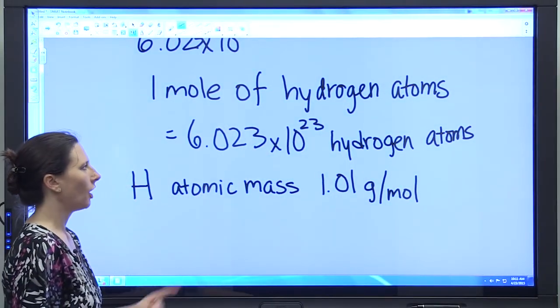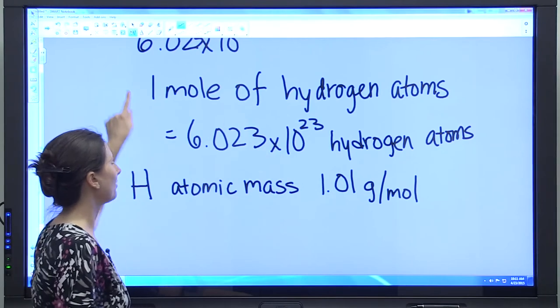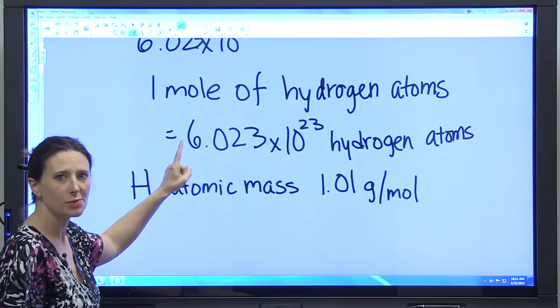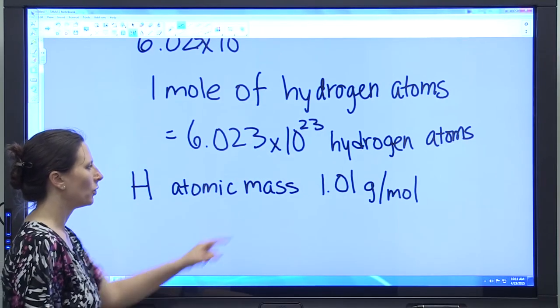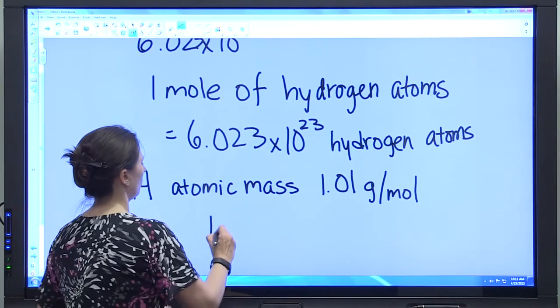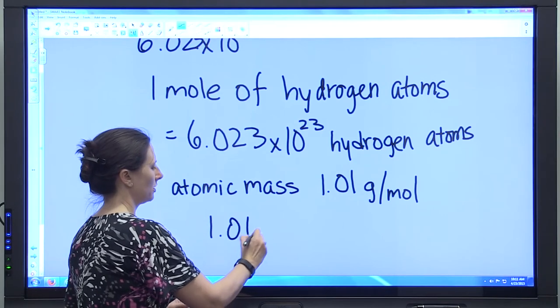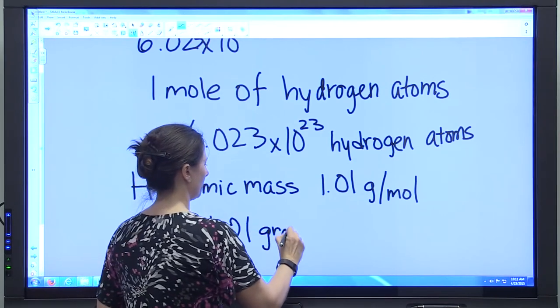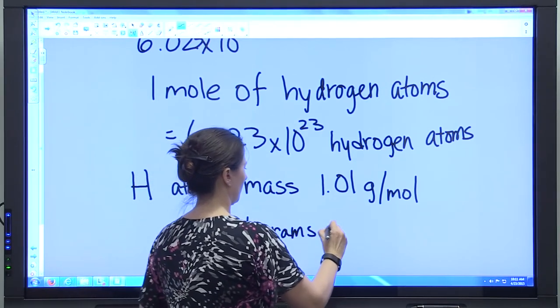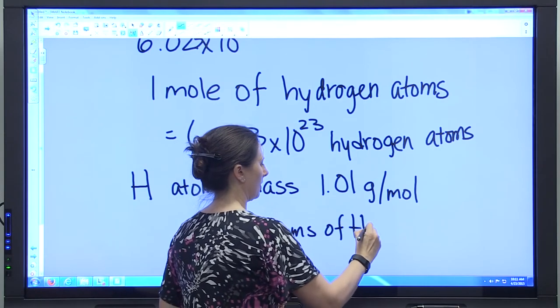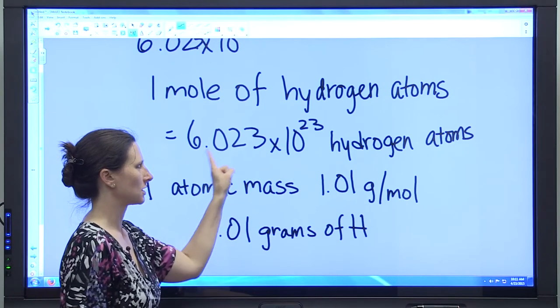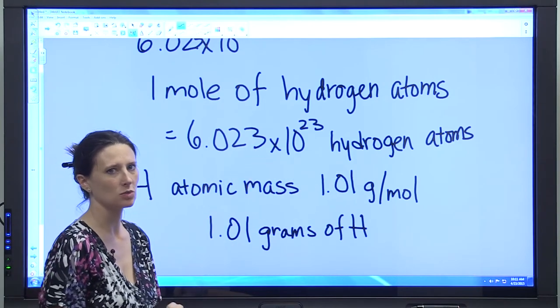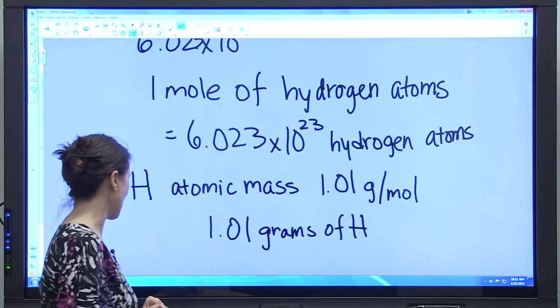So if we want to have one mole of hydrogen atoms, we want to have 6.023 times 10 to the 23rd hydrogen atoms, we would need to measure out 1.01 grams of hydrogen. And we would know that that contains 6.023 times 10 to the 23rd hydrogen atoms.